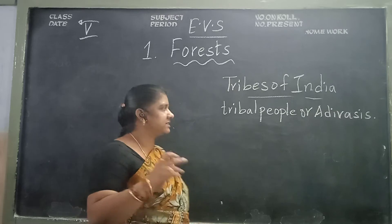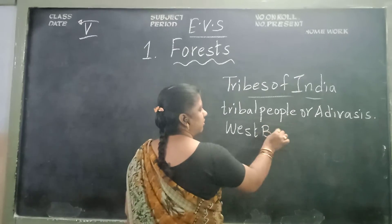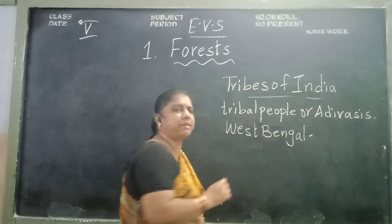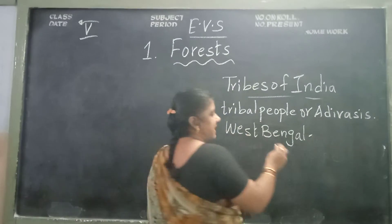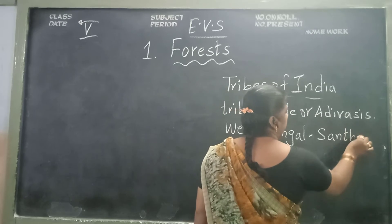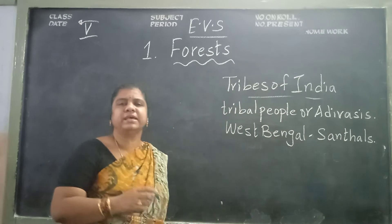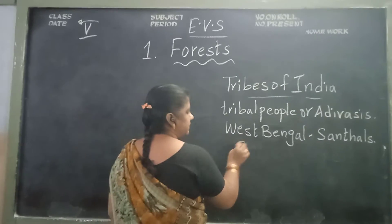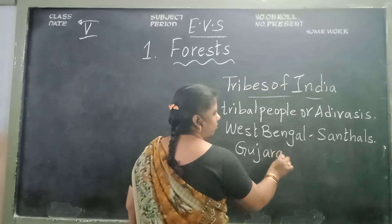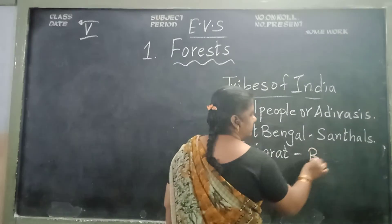For example, in West Bengal the tribal people who live there are called Santals. Whereas in Gujarat, the tribal people who are living there are called Bhils.